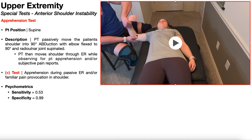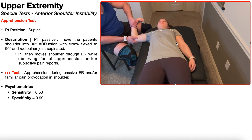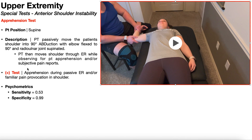From this position, the PT passively moves the shoulder through external rotation while observing the patient for signs of apprehension — a grimace or anything indicating fear of the movement, fear of shoulder subluxation, fear of pain, or actual subjective pain reports during external rotation. A positive test is apprehension during passive external rotation and/or familiar pain provocation in the shoulder. It doesn't have to be both — just the pain or just the apprehension is sufficient to elicit a positive result.